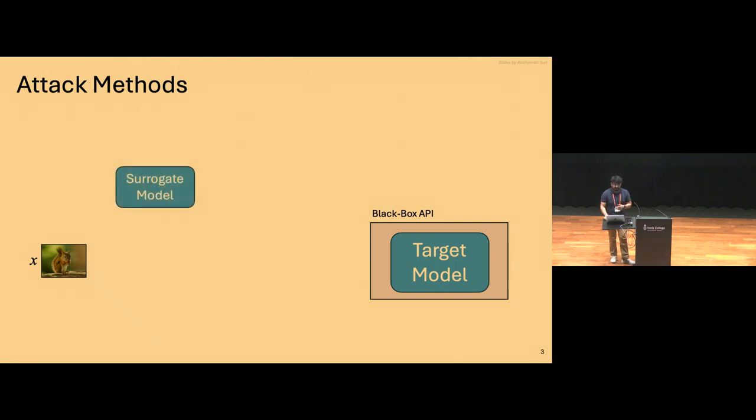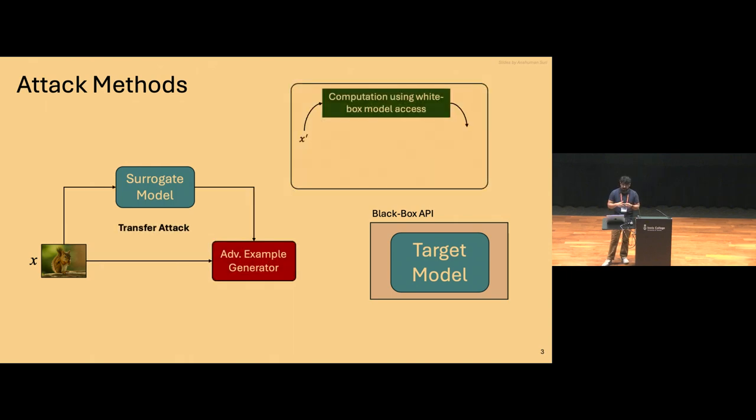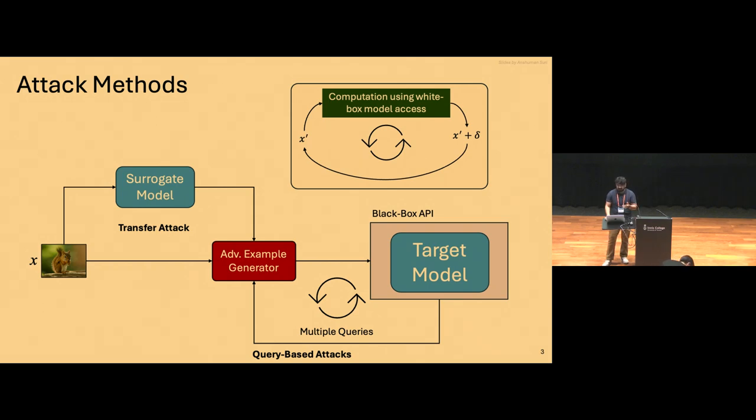And when we're looking at black box adversarial attacks, there's really two broad approaches that you could take. The first one is based on transfer attacks, so you have access to some sort of local models. And based on some sort of an iterative subroutine, you can generate adversarial inputs with the examples that you have access to. And in the query-based setting, you can try to utilize interactive access that you have to the target model and try to refine your perturbations based on the kind of feedback you're getting.